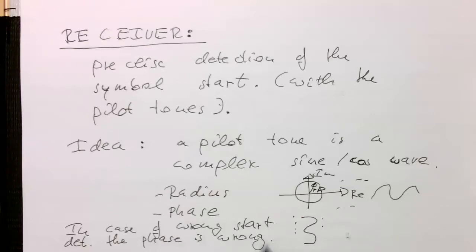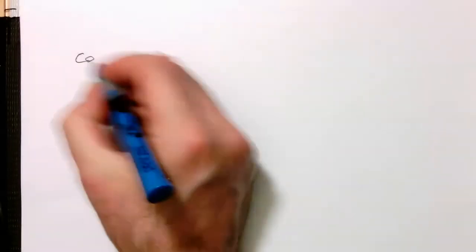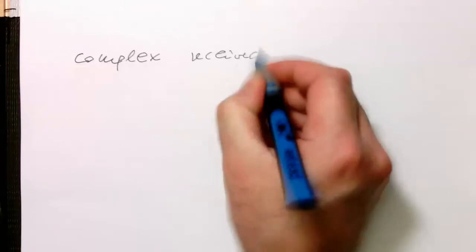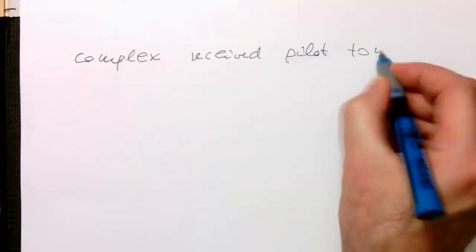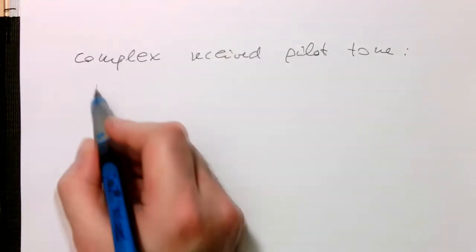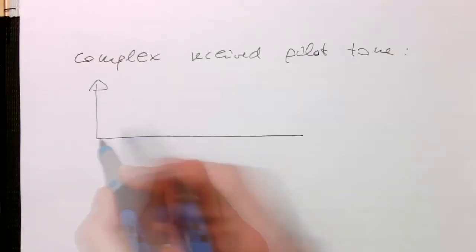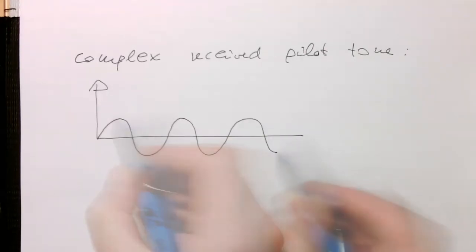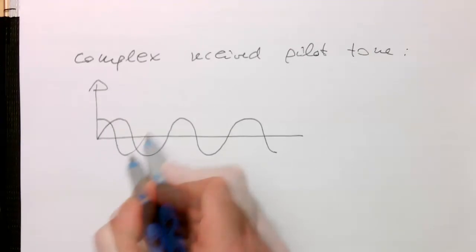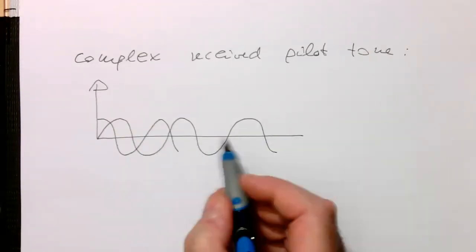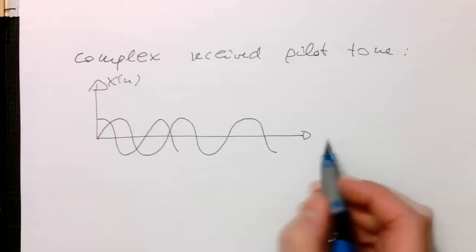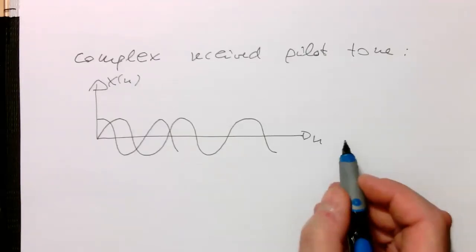So, imagine our complex received pilot tone looks like that. The real part, for example, let's say that's the complex part. It doesn't matter. But we have basically something like that. And so, that's our complex pilot tone here, x of n. And then, this leads us to a certain x of k.